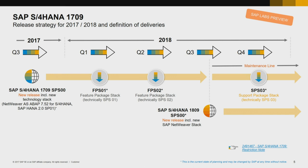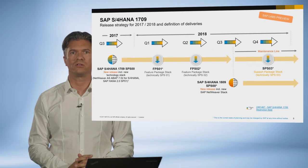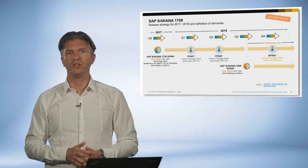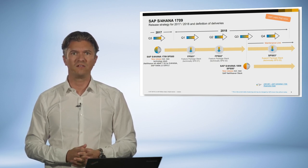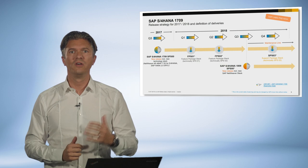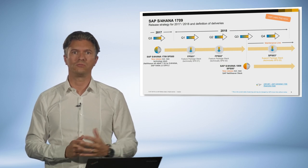As you can see on this chart, the next release for the on-premise market is already planned as well. Of course, customers are able to continue to work with their 1511 or 1610 releases, even if S4HANA 1709 is already out in the market. SAP is planning to support each release for five years, and during this period, SAP will deliver support packages several times a year, as usual.